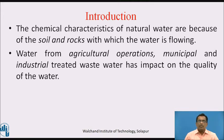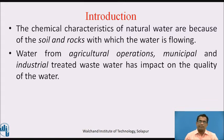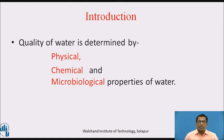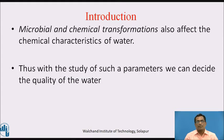Introduction. The chemical characteristics of natural water are because of the soil and rocks with which the water is flowing. Water from agricultural operations, municipals, and industrial treated wastewater has impact on quality of the water. Quality of water is determined by its physical, chemical, and microbiological properties. Microbial and chemical transformations also affect the chemical characteristics of water. Thus, with the study of such parameters, we can decide the quality of water.